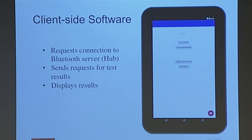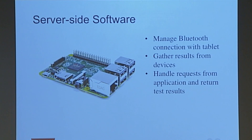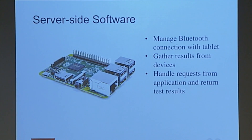The first part is the Android application. This is a screen grab of the basic Android app I wrote. From here you can request a connection to the Raspberry Pi by clicking the connect Bluetooth button, and then hit either of the other buttons to send requests for glucose or blood pressure readings, with results displayed at the top. On the Raspberry Pi side, we manage the Bluetooth connection, gather results from the devices, and handle incoming requests — so when we receive a message to get glucose or blood pressure results, the Raspberry Pi gathers those results, formats them, and sends them over Bluetooth to the Android tablet.